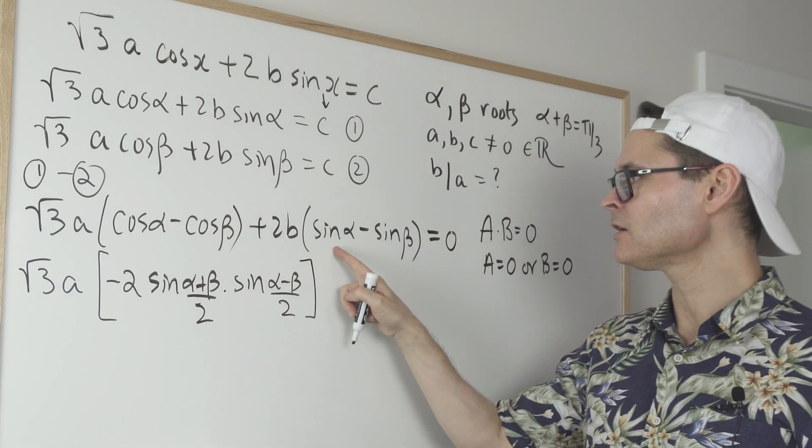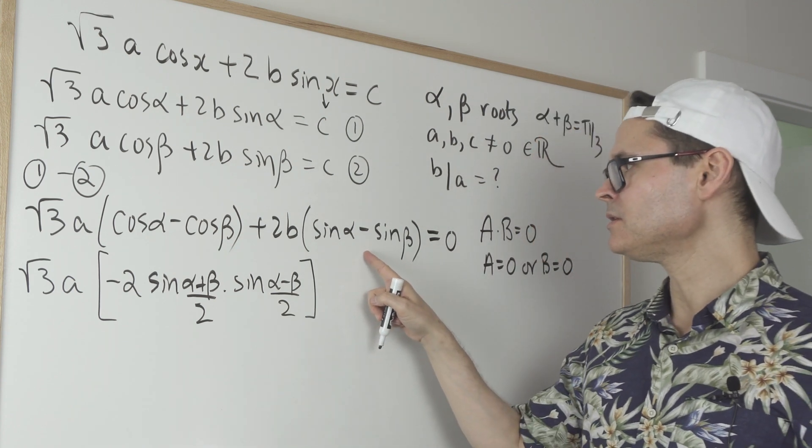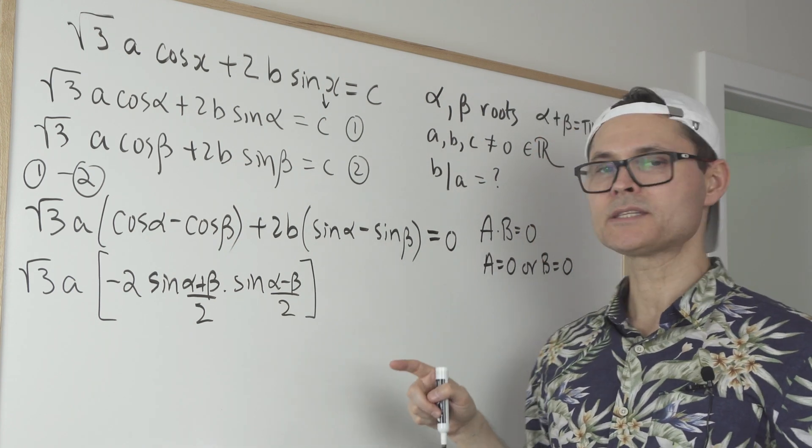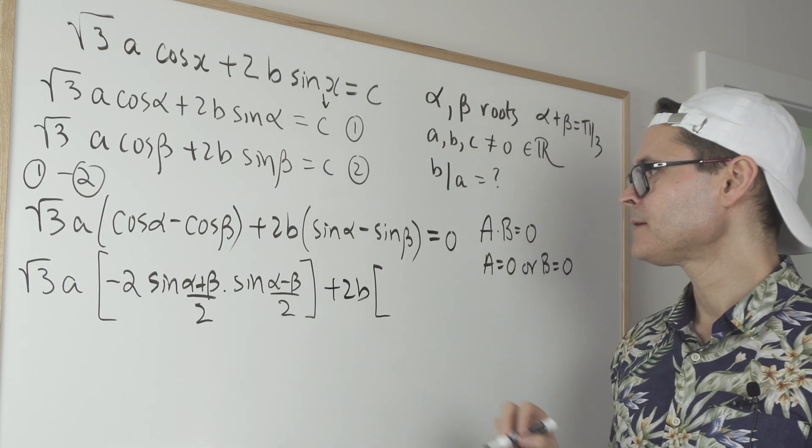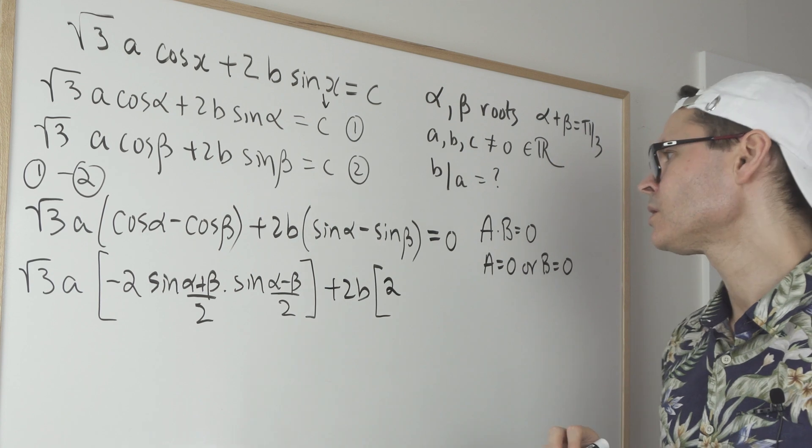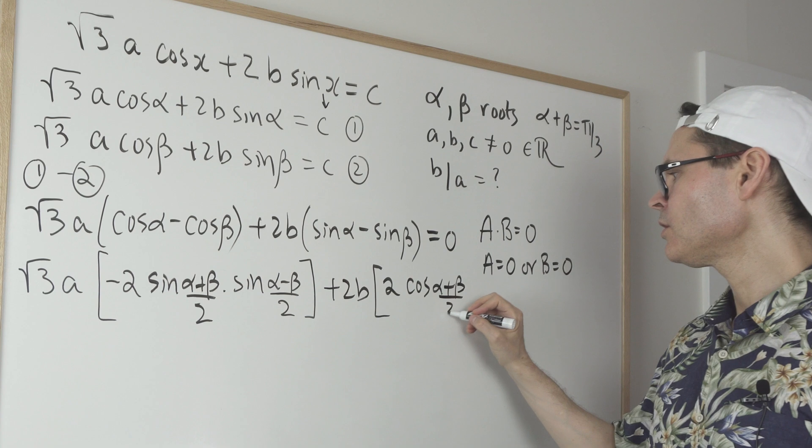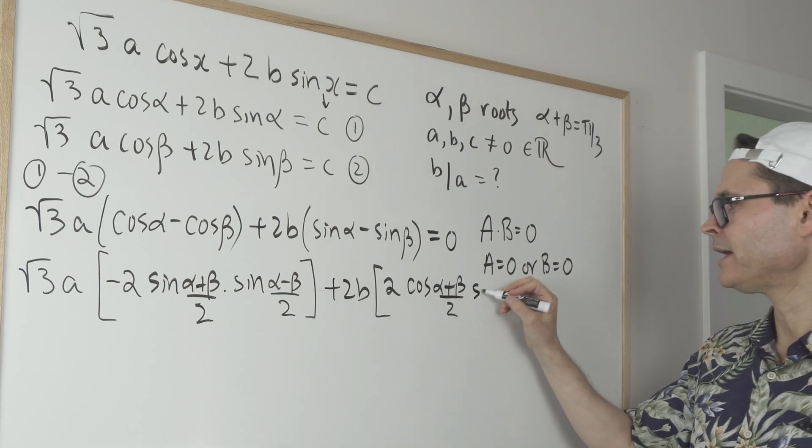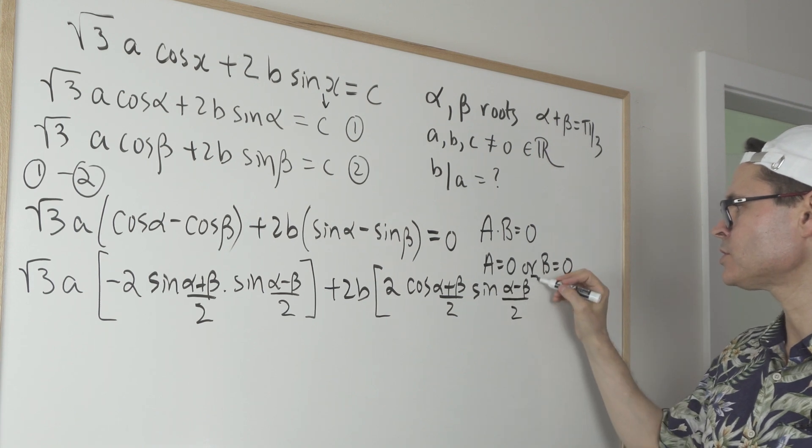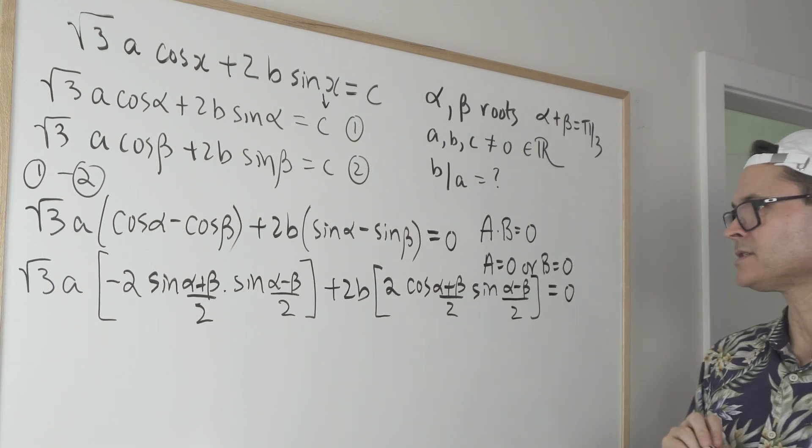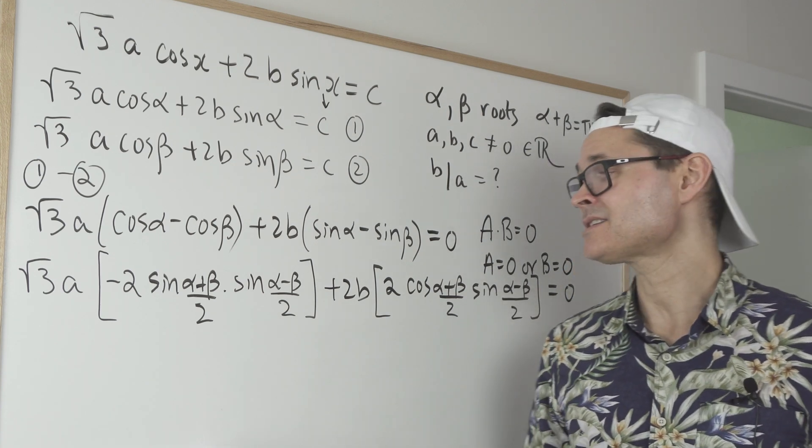And similarly here, there's also a difference to product substitution for sine α minus sine β. So plus 2B, and in this case, I get just 2. I'm going to get a cosine (α+β)/2 multiplied by the sine of (α-β)/2. And that's all equal to zero. So it looks pretty ugly, but this is actually pretty useful for at least a couple of reasons.